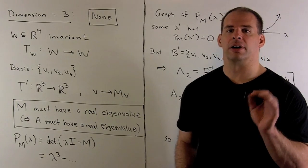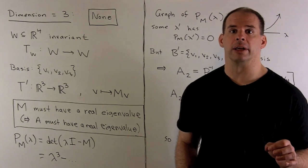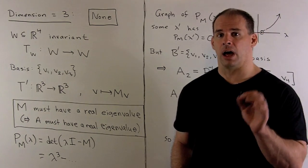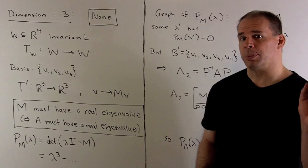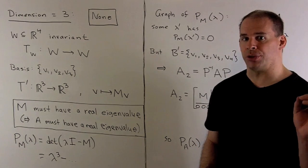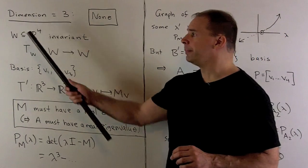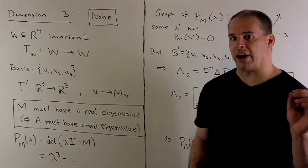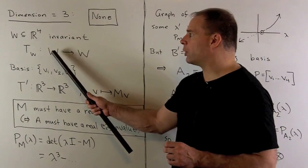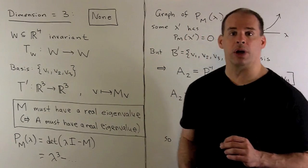Next, let's consider invariant subspaces of dimension 3. Again, we'll have none. Let's see why that happens. Suppose we have an invariant subspace of dimension 3. I'm going to call it W. We restrict T to W. Then, because W is invariant, vectors in W are just going to get carried back to W under T.